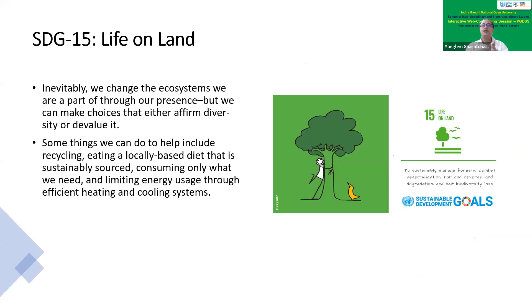SDG 15 is about life on land. In the name of development and extension of agricultural activities, we cut trees — destroying the homes of many species. We need to protect our forests, combat desertification, and reverse the degradation that has already happened. We can reclaim and restore degraded areas. When we undertake development activities, we must keep the impact on biodiversity in mind.